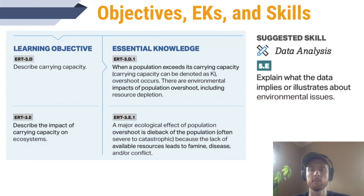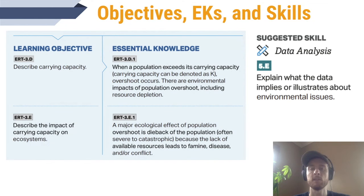We also need to know that sometimes the die-off is catastrophic, meaning it isn't just a little dip back below the carrying capacity, but a major decline in population size. This can happen if resources are severely depleted or if the population becomes really dense, allowing a severe disease outbreak. It could even lead to famine, which again is going to lead to a massive die-off and a decline in population size.